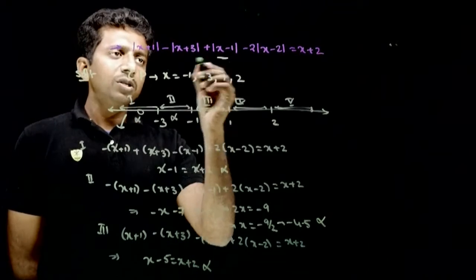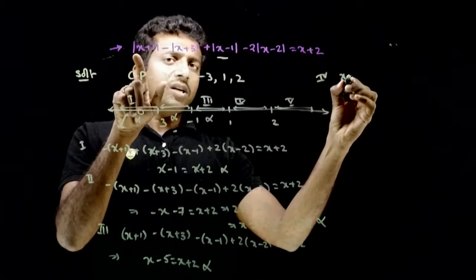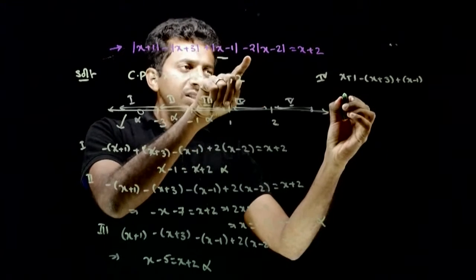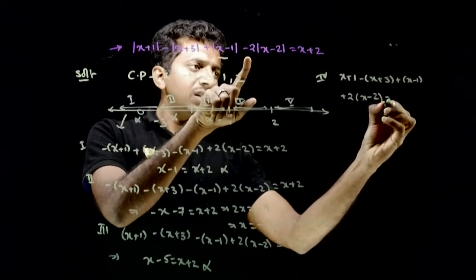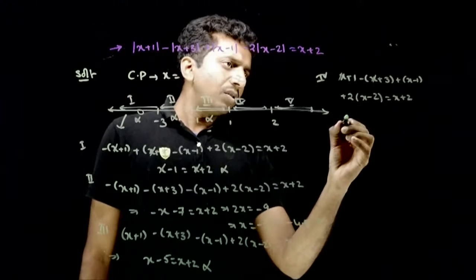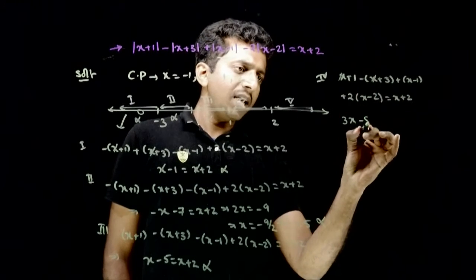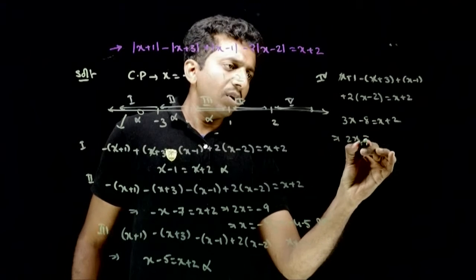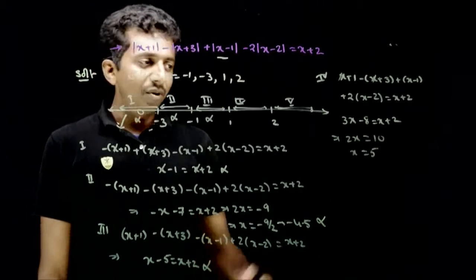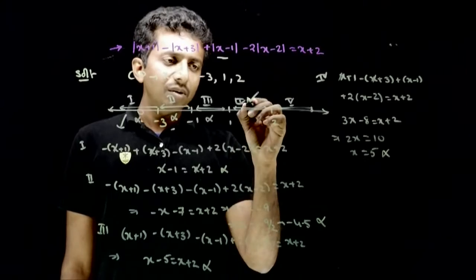Now go to the fourth interval (1 to 2). Here x+1, x+3, and x-1 are positive, but x-2 is negative. The equation becomes: (x+1) - (x+3) + (x-1) + 2(x-2) = x+2. Solving, we get 2x = 10, so x = 5. But we are solving between 1 and 2, and x = 5 does not lie in this interval, so there is no solution here either.